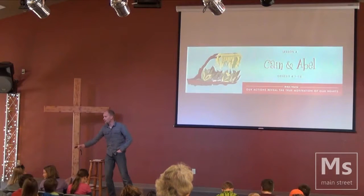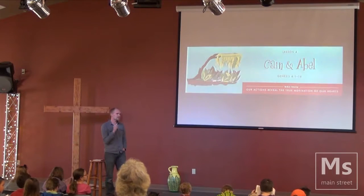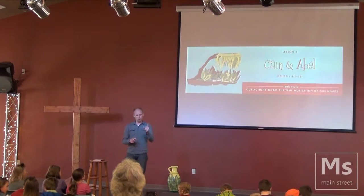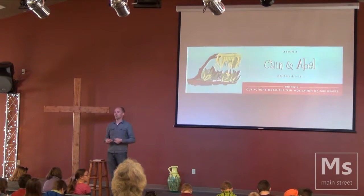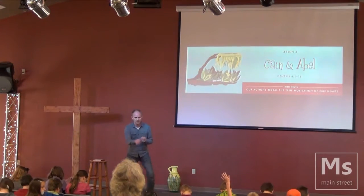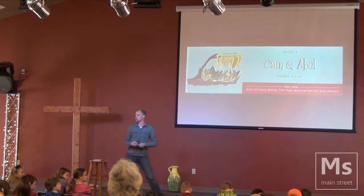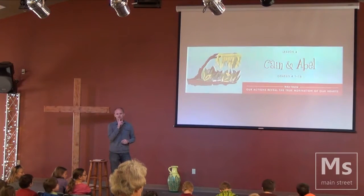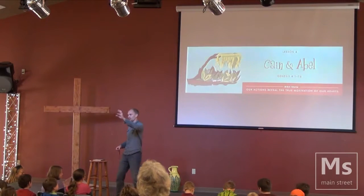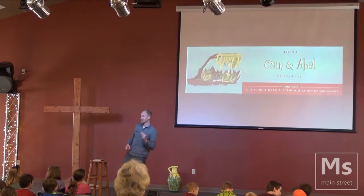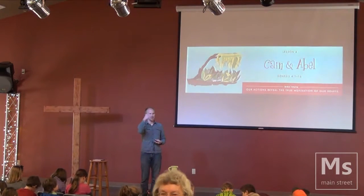Turn in your Bible to Genesis 5. It's interesting that the Bible goes in order: one, two, three, four, five. What does the top of Genesis 5 say? And if you remember last week, we went through how this person lived 935 years and then he died, and this person lived 962 years — that's Genesis 5.